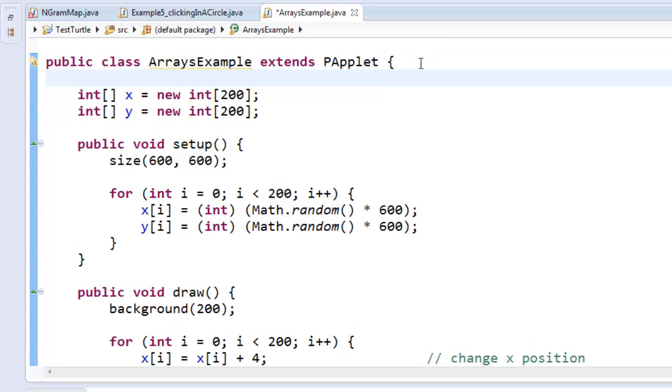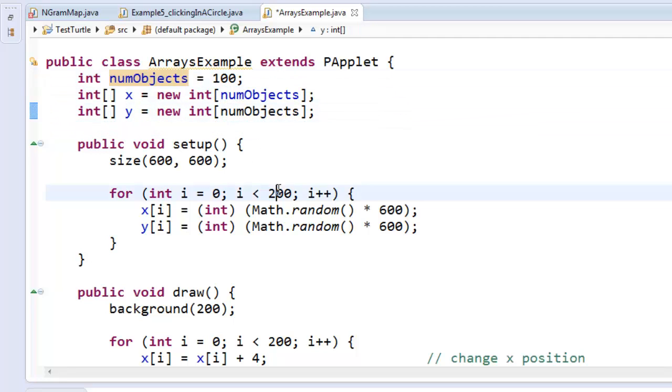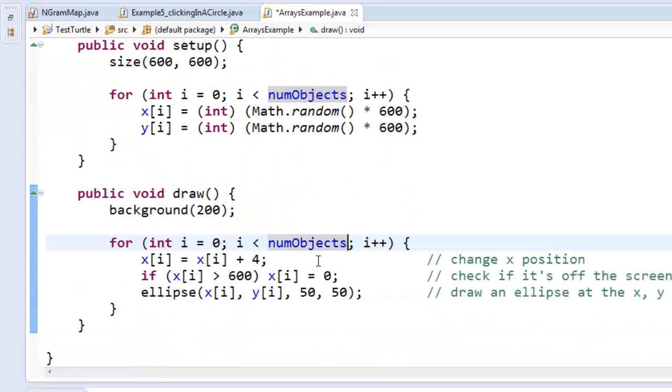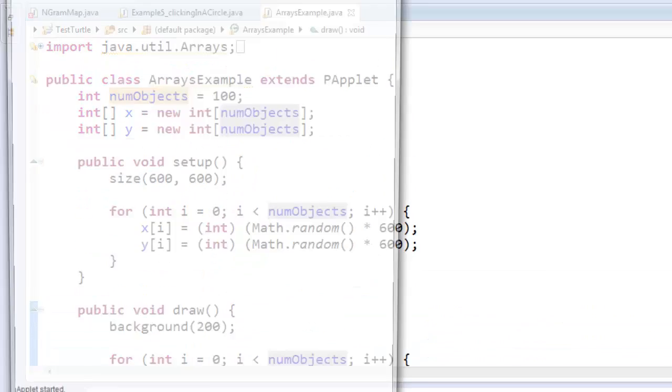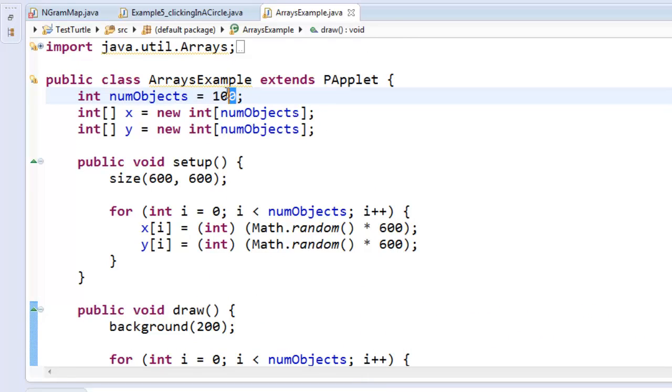An even nicer thing that you could do is up at the top, you could make a variable called number of objects and let's make that 100. And now you can use that variable in all of the places. So now you see there's 100, but now if I want there to just be 10, I just change number of objects and now there's just 10. So changing a single number will make the whole program change. That's it. I hope you've enjoyed it. We're going to do a lot more with this in the coming weeks.